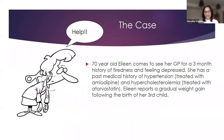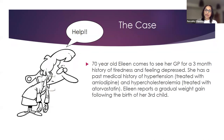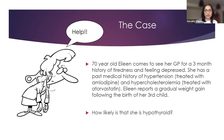Let's talk about a case. There's a 70-year-old Eileen who comes to see her GP for a three-month history of feeling tired and feeling depressed. She has a past medical history of hypertension treated with amlodipine and hyperlipidaemia treated with atorvastatin. On further questioning, Eileen reports gradual weight gain following the birth of a third child. I'd like you to vote on our first poll question: based on this short history, how likely do you think that Eileen is hypothyroid — less likely, highly likely, or not sure?